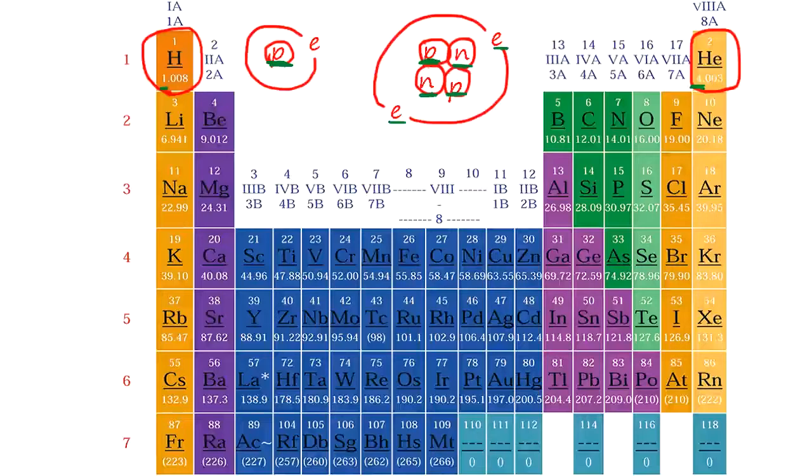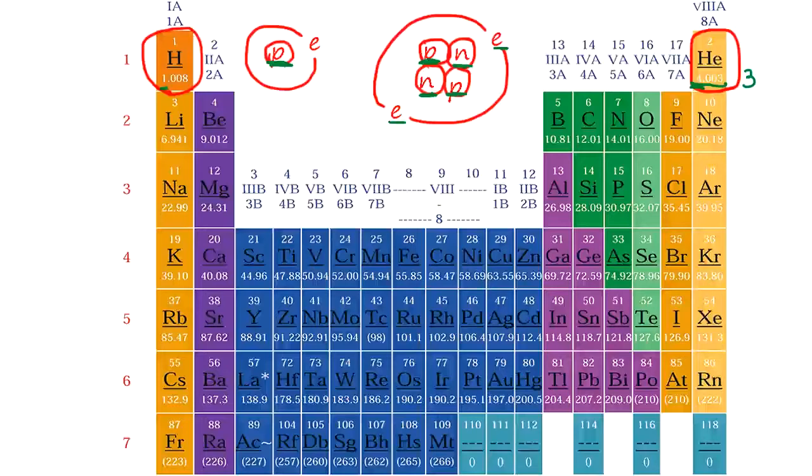Now, with Helium, you can take 1 Neutron out. Then this 4 becomes 3. It's lighter Helium, so it's called Helium-3. They are called isotopes. They are chemically identical, but have a different weight because of the Neutron.